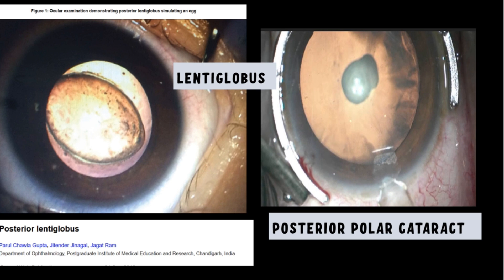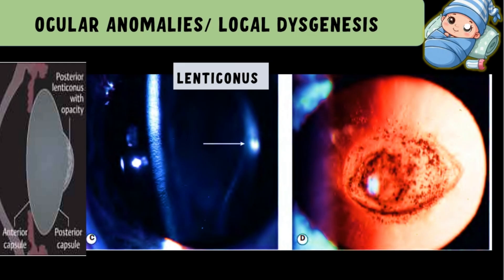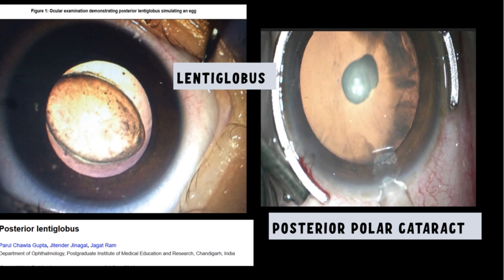Another ocular anomaly is lentiglobus — a very rare condition associated with a hemispherical bulge of the posterior lens, meaning almost the entire posterior hemisphere is bulging, unlike the localized bulge seen in lenticonus. The type of cataract seen here is a posterior polar cataract. One important clinical point: we must be very careful while operating cataract cases with lentiglobus, as they often have a defect in the posterior capsule.